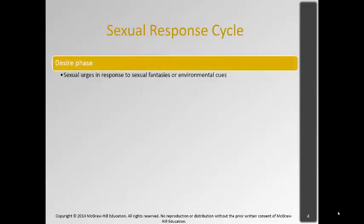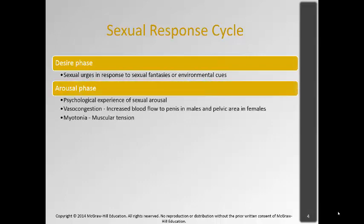When we talk about our body's reaction, there are different phases in the sexual response cycle. The first phase is the desire phase, where sexual urges start in response to sexual fantasies or environmental cues. This is kind of the pre-sex phase — this might be kissing, watching pornography, or thinking about things. The arousal phase is when there's the psychological and physiological experience of sexual arousal.